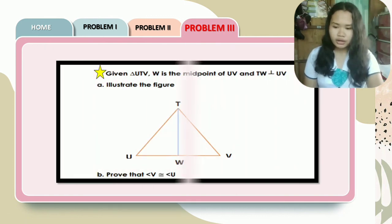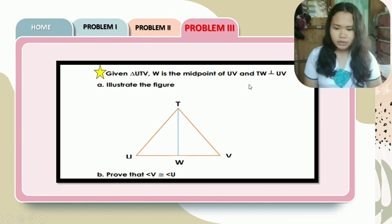For your seat work, we have here: Given triangle UTV, W is the midpoint of UV, and TW is perpendicular to UV. First, illustrate the figure. Letter A has been done already for you, and what you need to answer is letter B. Prove that angle V is congruent to angle U.